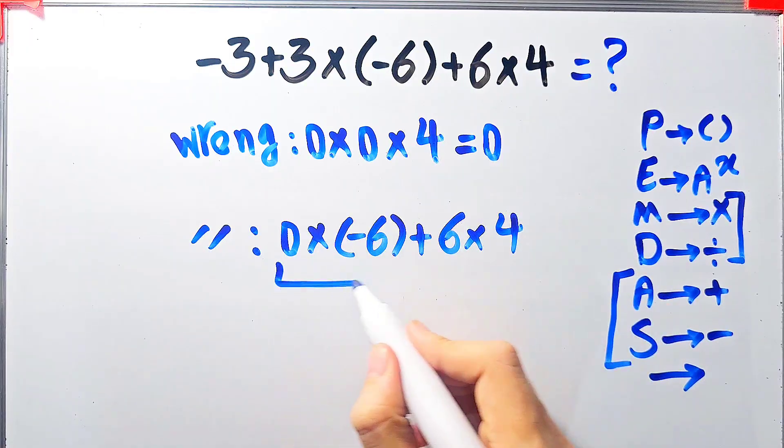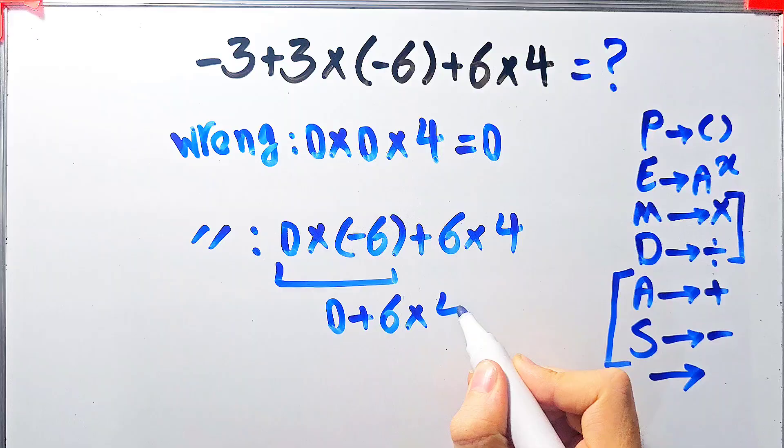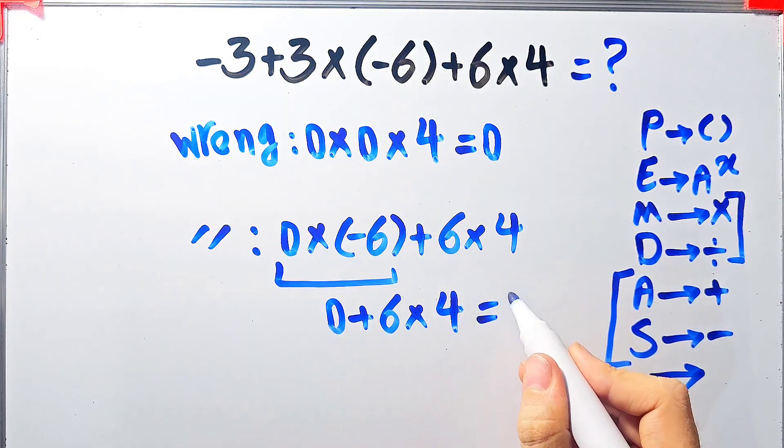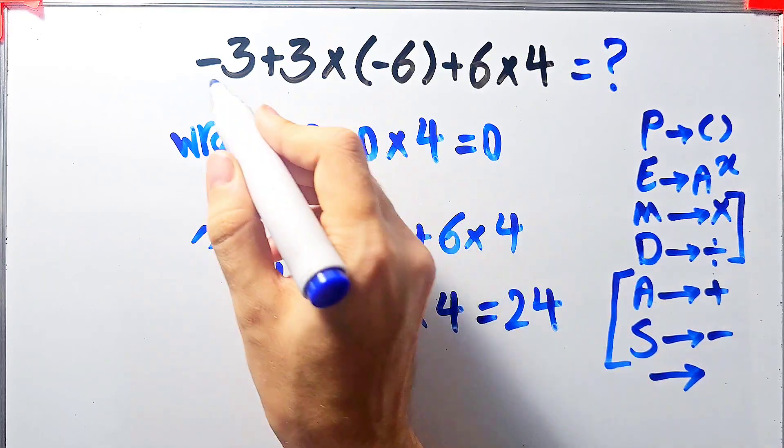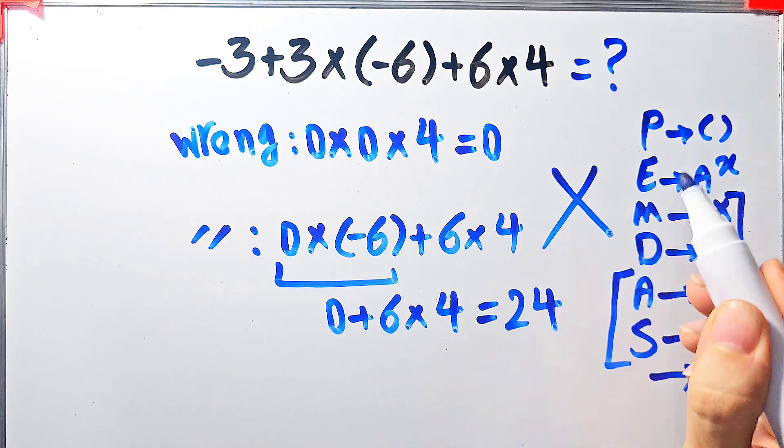0 times negative 6 equals 0, 0 plus 6, then times 4. 0 plus 6 equals 6, and 6 times 4 equals 24. They say the final answer of this question equals 24, but this answer is definitely wrong.